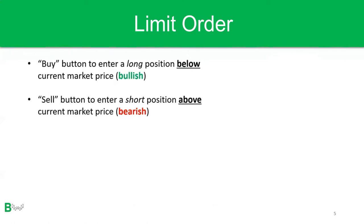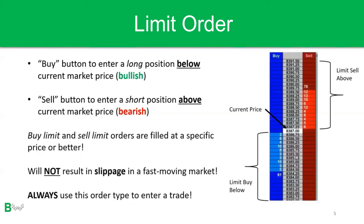Next, let's talk about limit orders — the most common order type and the one I highly recommend when entering a position. A buy limit order enters a long position below the current market price, and a sell limit order enters a short position above the current market price. Limit orders are filled at a specific price or better and do not result in slippage in fast-moving markets. On the active ladder, you click the red side above the current price for a sell limit, and the blue side below for a buy limit.